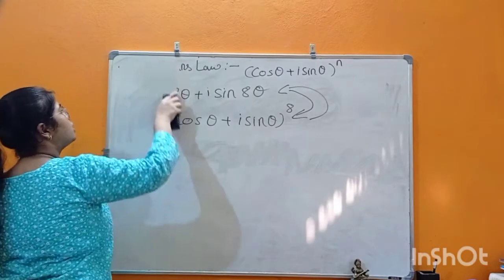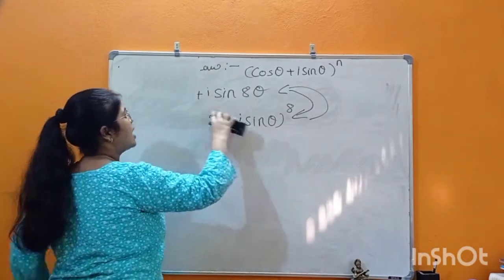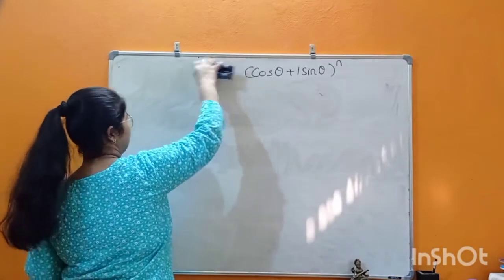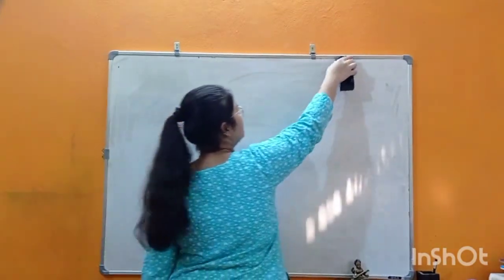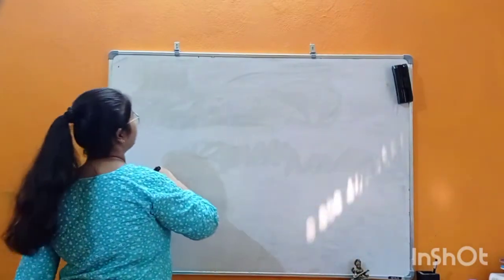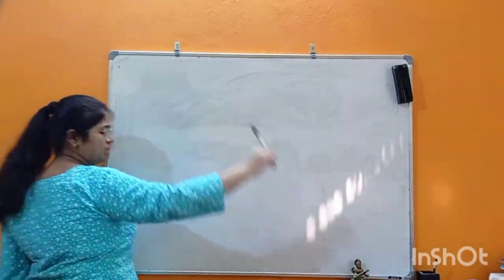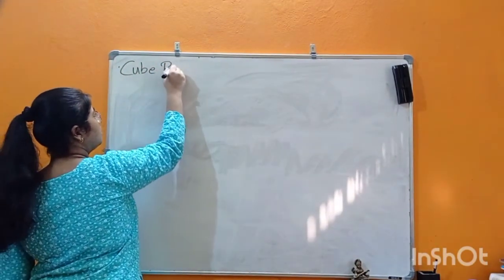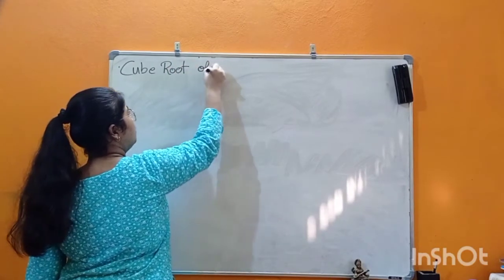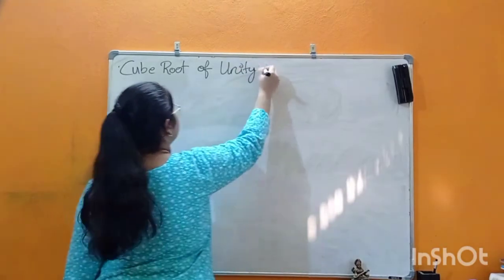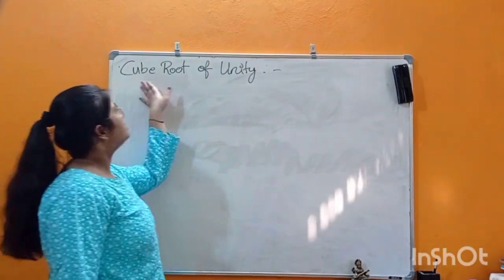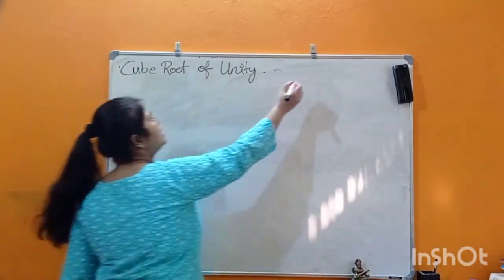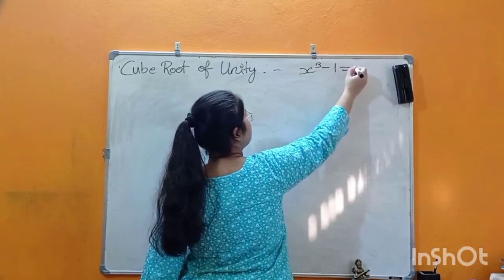Now the most important topic of this video: the Cube Root of Unity, where we will learn about omega. Many of you may have heard about omega but don't know what it actually is. To understand cube root of unity, consider the expression x³ − 1 = 0.